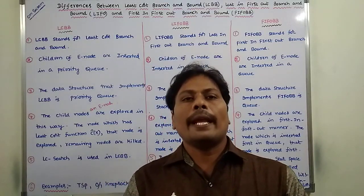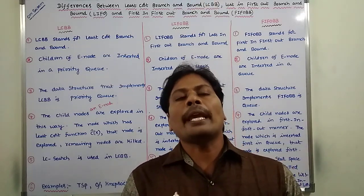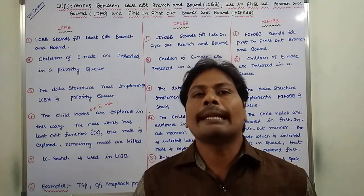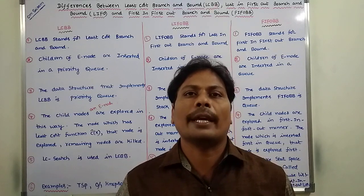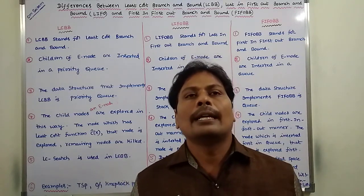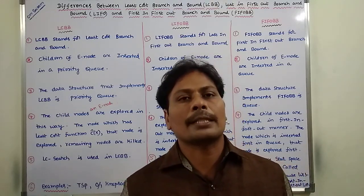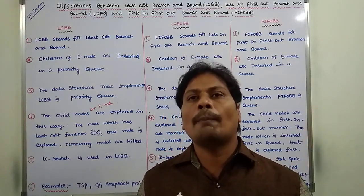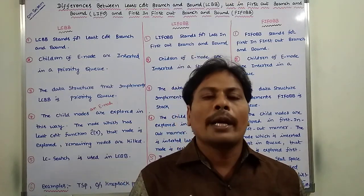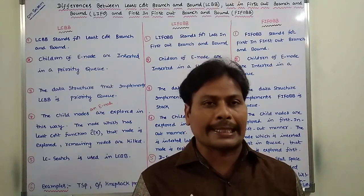Hi friends, today I am giving a lecture on differences between LCBB, FIFOBB and LIFOBB in branch and bound in design and analysis of algorithms. There are three types of branch and bound techniques: first one is least cost branch and bound, second one is last in first out branch and bound, and third one is first in first out branch and bound. In this video, the differences between these three bounding techniques are discussed.